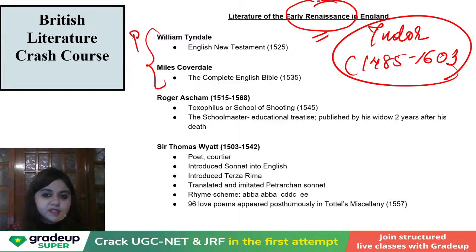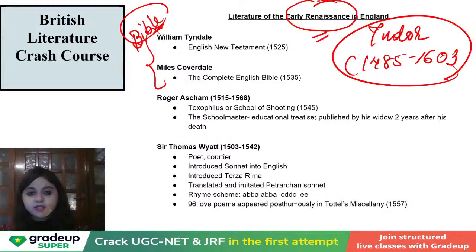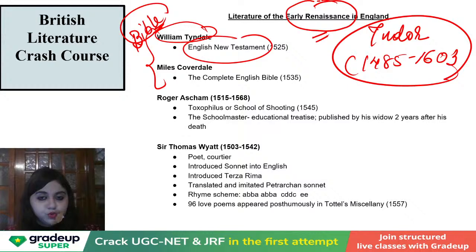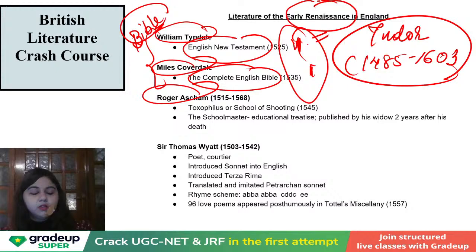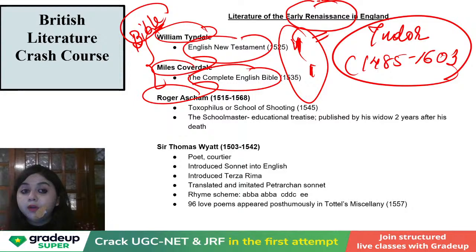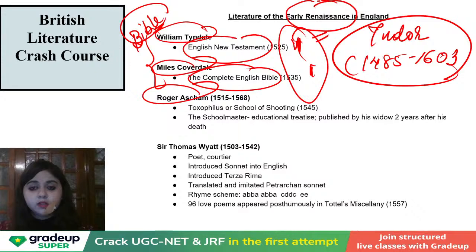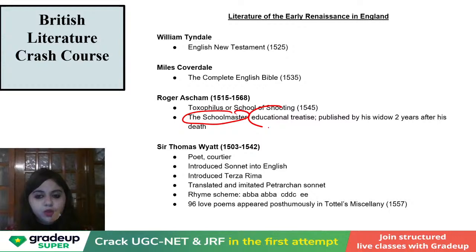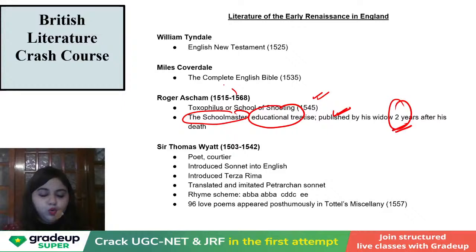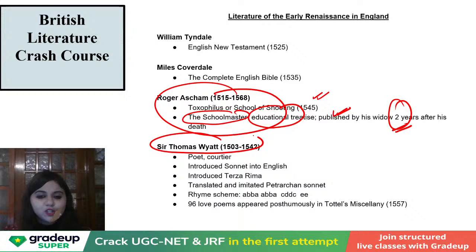Translations of the Bible are an important literary genre developing during the time. You have William Tyndale writing the English New Testament. You have Miles Coverdale writing the complete English Bible. Tyndale and Coverdale are the two translators of the Bible — they wanted to disassociate themselves from the elevated tradition of Bible writing which was not comprehensible to anyone, making it available for everyone in English. Roger Ascham is known for Toxophilus — the school of shooting — and also for The Schoolmaster, an educational treatise published by his widow two years after his death.